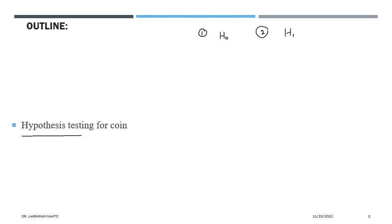Only two things we do in hypothesis testing: based on observations, we either want to reject H0 — after tossing that coin many times, if we have enough evidence to reject H0, then we reject H0 while supporting H1 — otherwise, we fail to reject H0, meaning we do not have sufficient data or information to support rejection of H0.